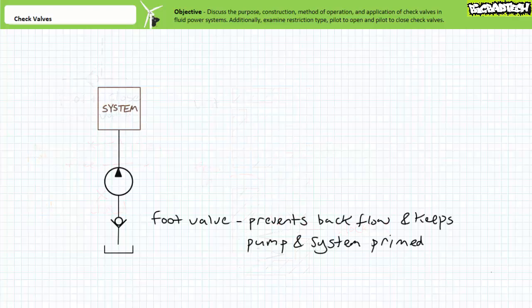Our basic orientation to check valves is now complete. Let's quickly discuss a couple basic check valve applications before we bring this lecture to a close. The most obvious application of a check valve is to allow fluid flow in one direction and prohibit it in another.